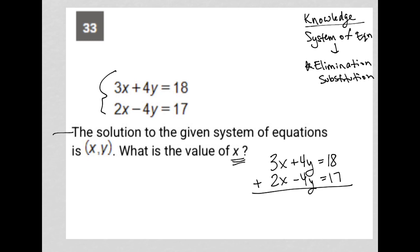When I add the two equations together, 4y and negative 4y cross out, but 3x plus 2x is 5x, and 18 plus 17 is 35.